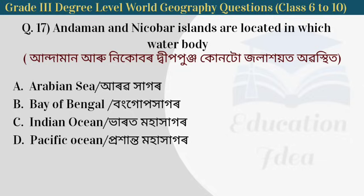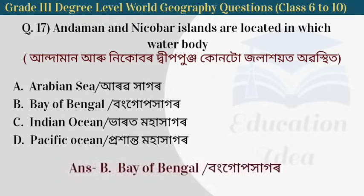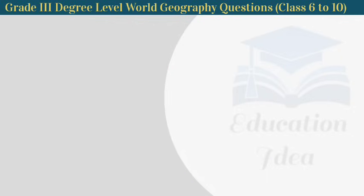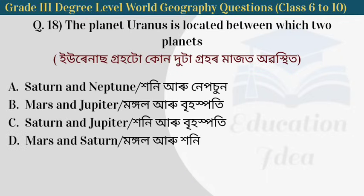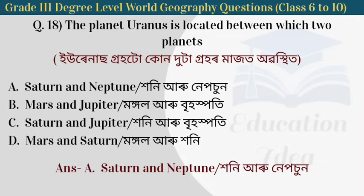Next question: the planet Uranus is located between which two planets? Uranus is located between Saturn and Neptune.